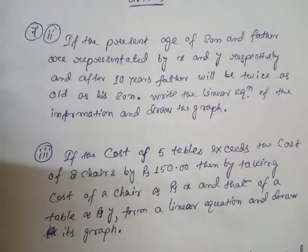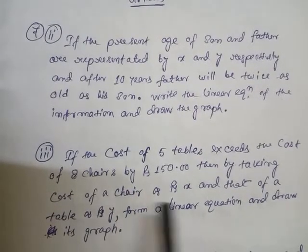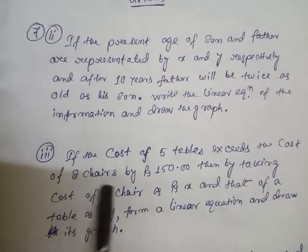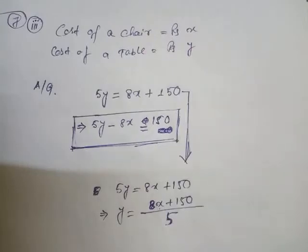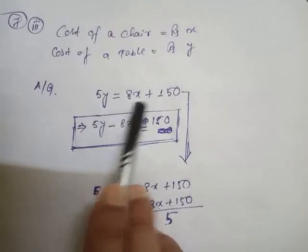Look in the question. Cost of chair is x, and cost of table is y, and 5 tables exceeds the cost of 8 chairs by 150. That's why 5y equals 8x plus 150.